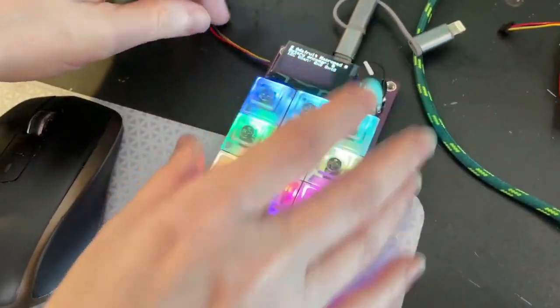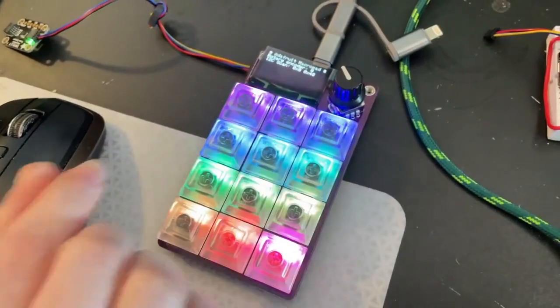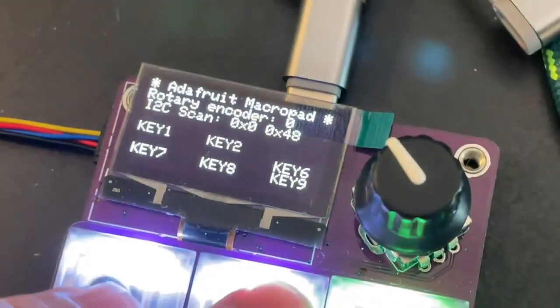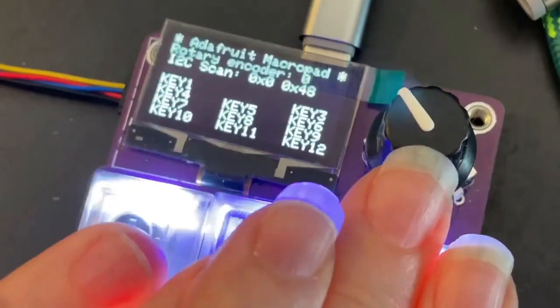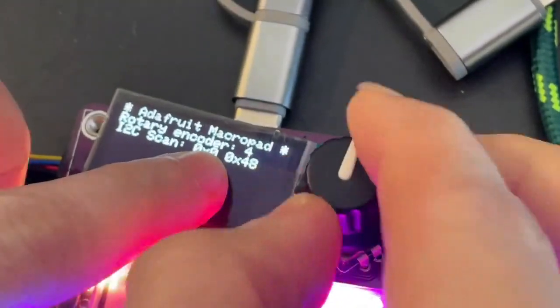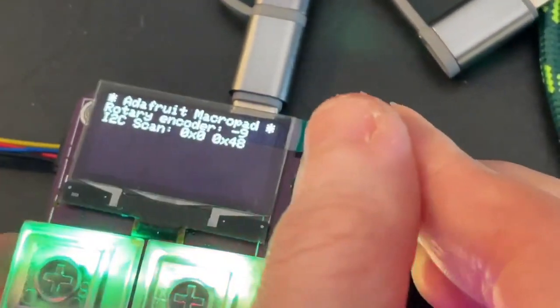So this is some Arduino code running on it that you can see it reacts to when key presses are pressed. Press them all. Yeah, there you go. There's also the rotary encoder which you can see as I turn it it goes the right direction. And when I press it, it also knows it was pressed.